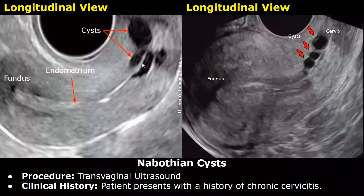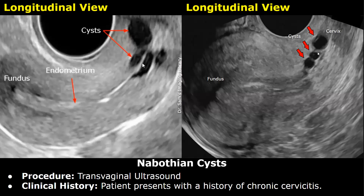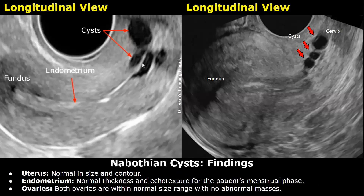Nabothian cysts are found in the cervix, so this is the report regarding nabothian cysts. Clinical history: patient presents with a history of chronic cervicitis. Findings: the uterus is normal in size and contour; the endometrium is normal in thickness and echo texture for the patient's menstrual phase.